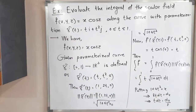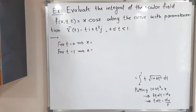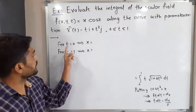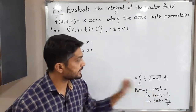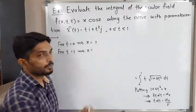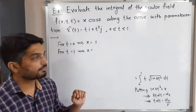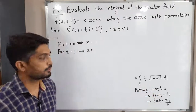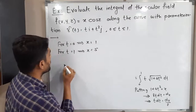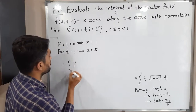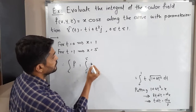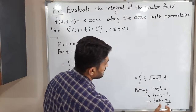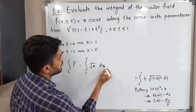For t = 0 (lower limit): substituting into x = 1 + 4t², we get x = 1. For t = 1 (upper limit): x = 1 + 4(1)² = 5. So the new limits for x are from 1 to 5. The integral of f over C becomes ∫₁⁵ √x · (dx/8).